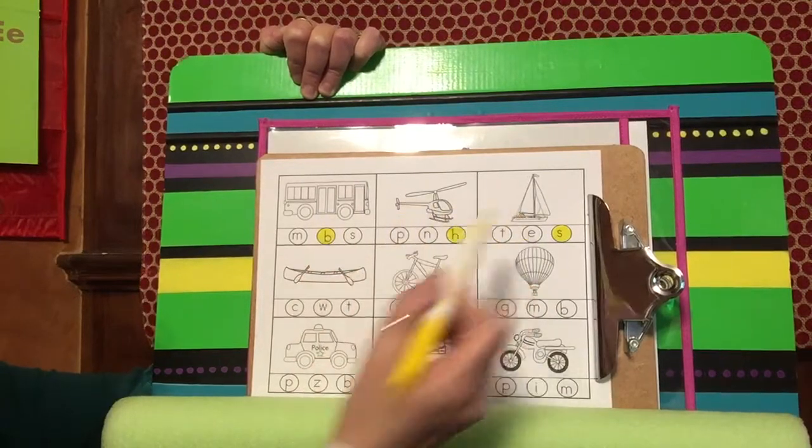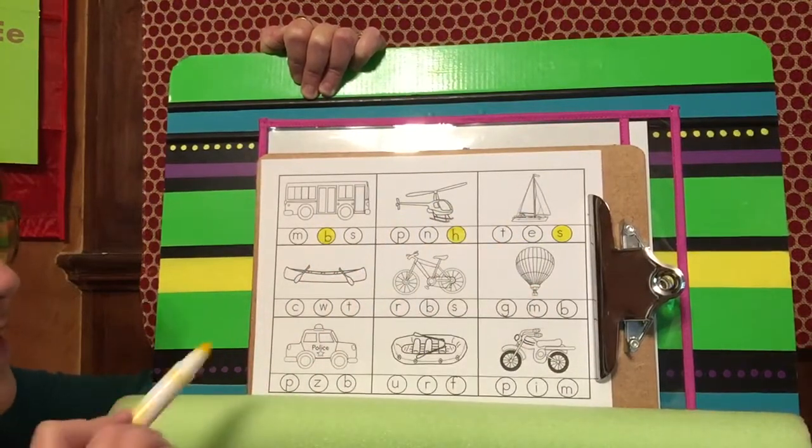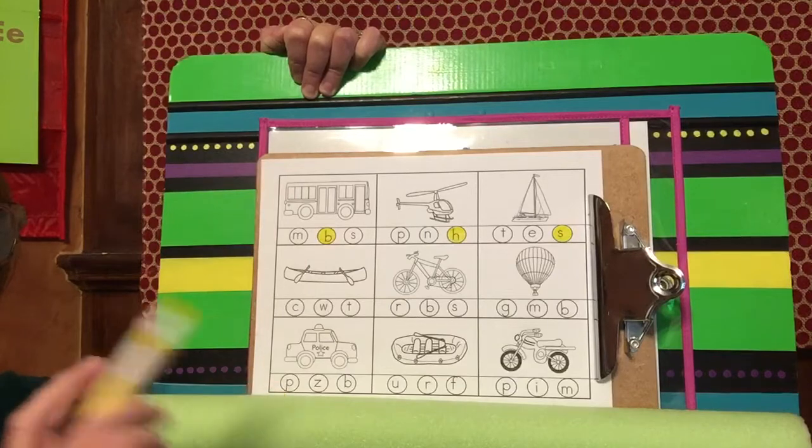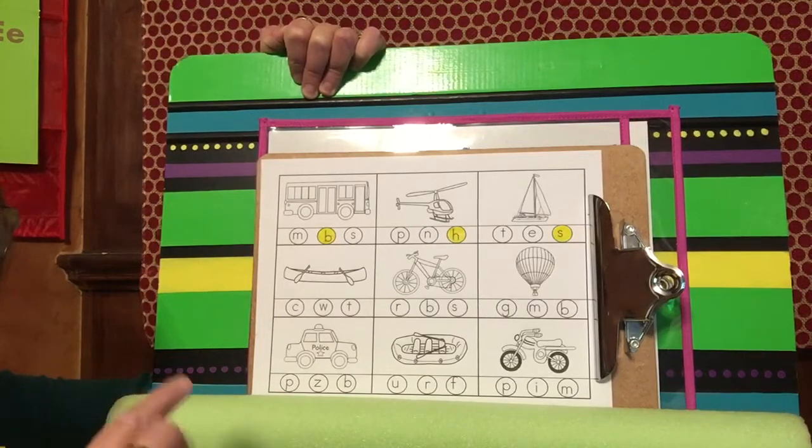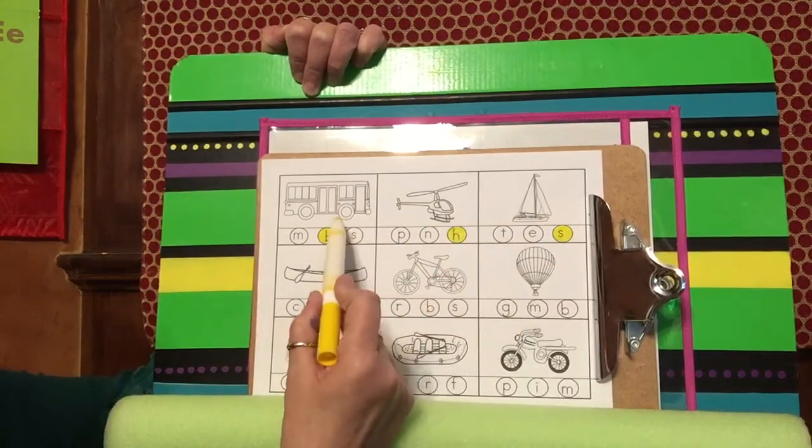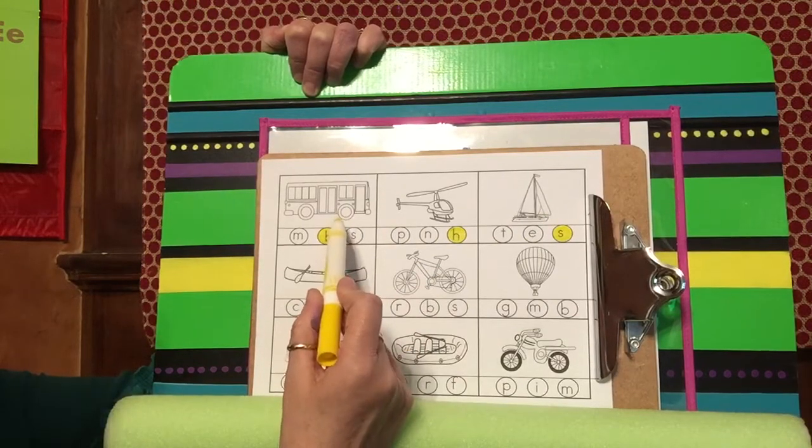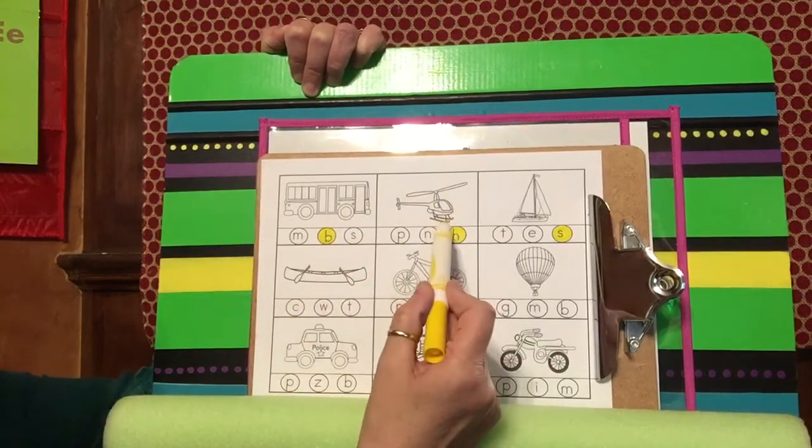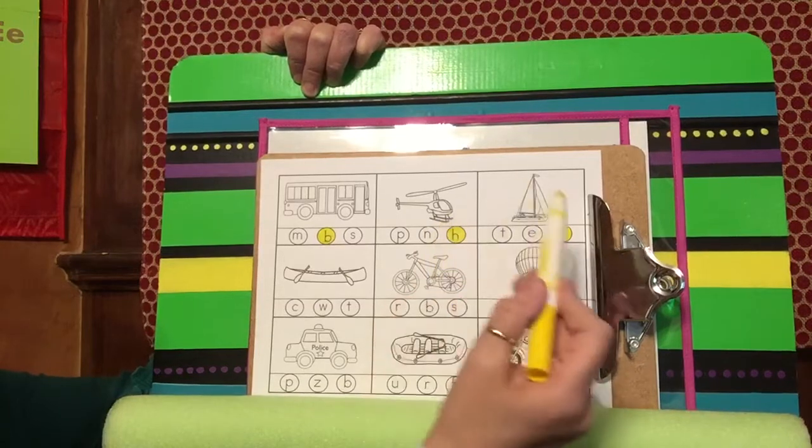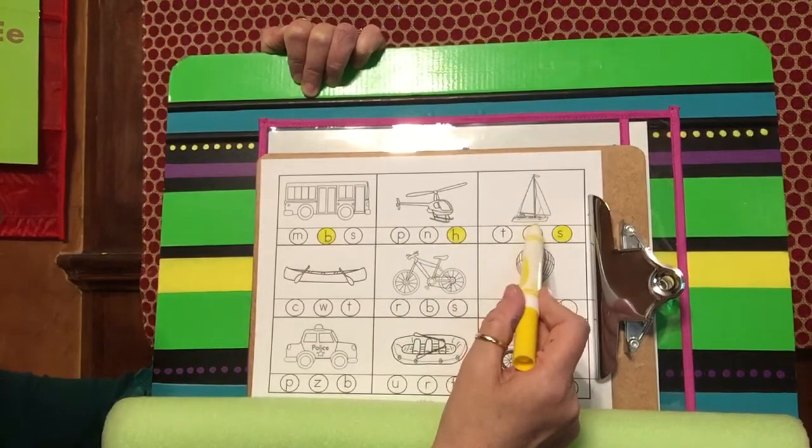Look at this top row. I know we've talked about different types of travel by sea, by land, and by air, and we've got all three right here. A bus is by land, a helicopter is by air, and the boat is by sea or water.